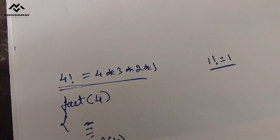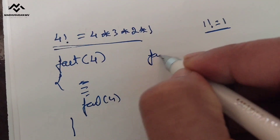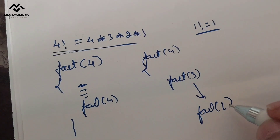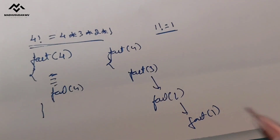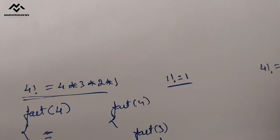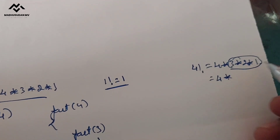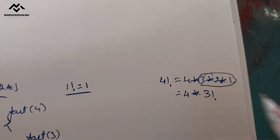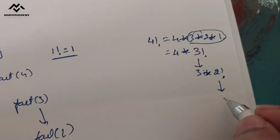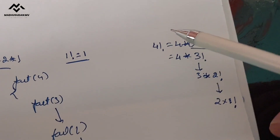So whenever we call the function again, the parameter value must change — it must decrease. Factorial of 4 calls factorial of 3, factorial of 3 calls factorial of 2, factorial of 2 calls factorial of 1. So 4 factorial is 4 × 3 factorial, 3 factorial is 3 × 2 factorial, and 2 factorial is 2 × 1 factorial.